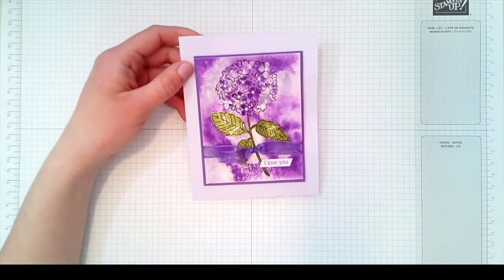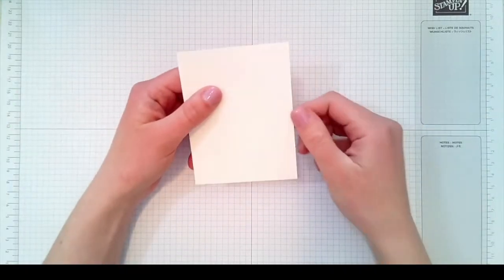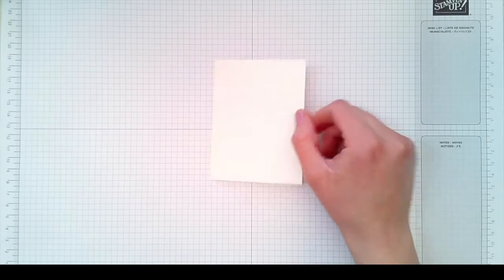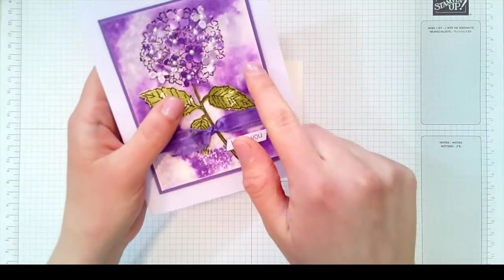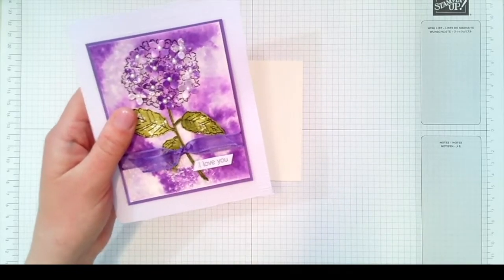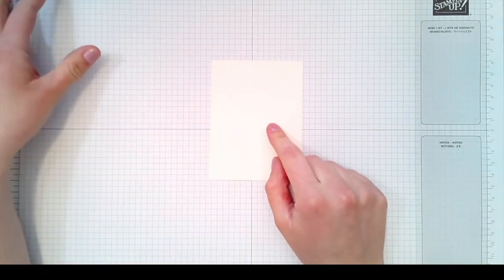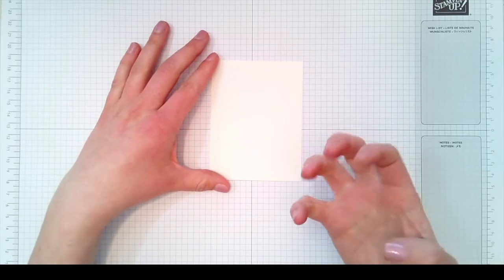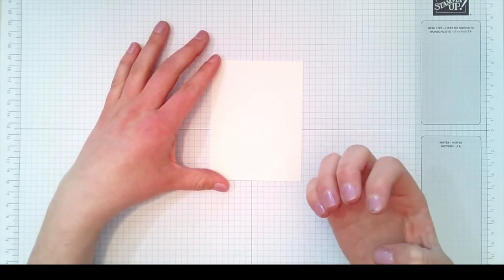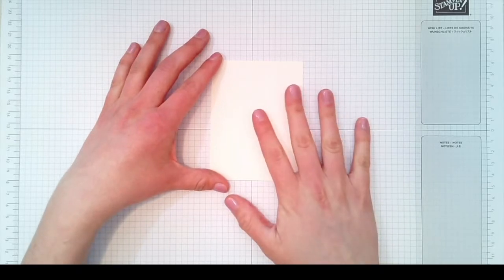To get started I'm going to take a 3 1/8 by 4 1/8 inch sheet of shimmery white. The technique that I'm going to be showing you today is called the smooch technique and that is how I got this background here. It's super cool. One important thing is to use shimmery white because it's more absorbent and adds extra shimmer to your project.